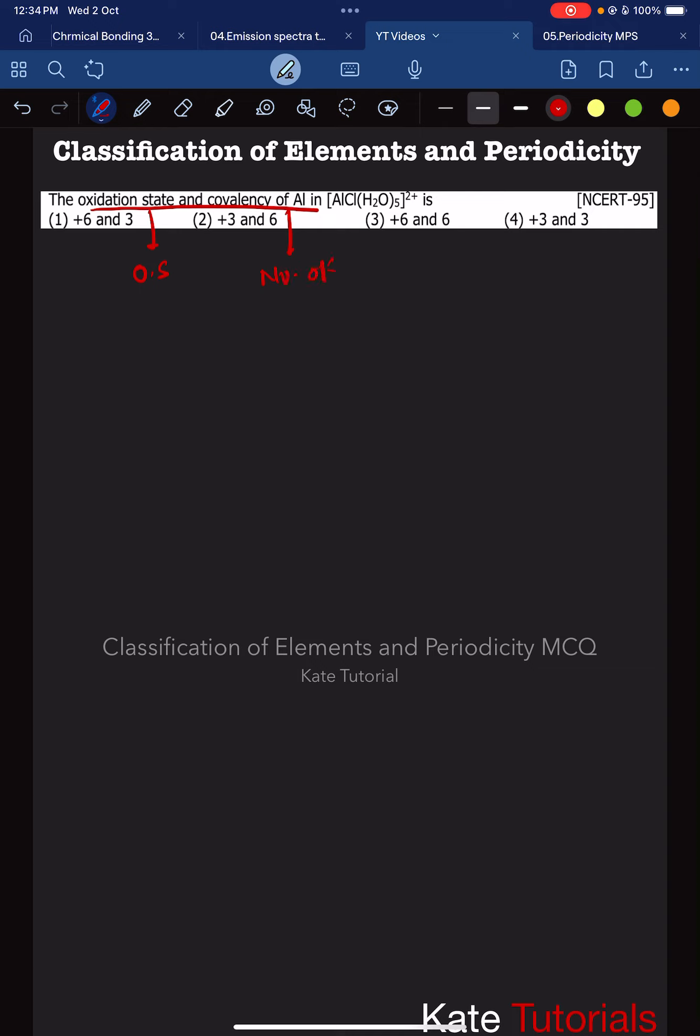Here all bonds are not covalent—along with covalent bonds, there are coordinate bonds. Covalency means coordination number, which is what we call the coordination number. The given compound is [Al Cl (H2O)5]^2+ with an overall charge of 2+.